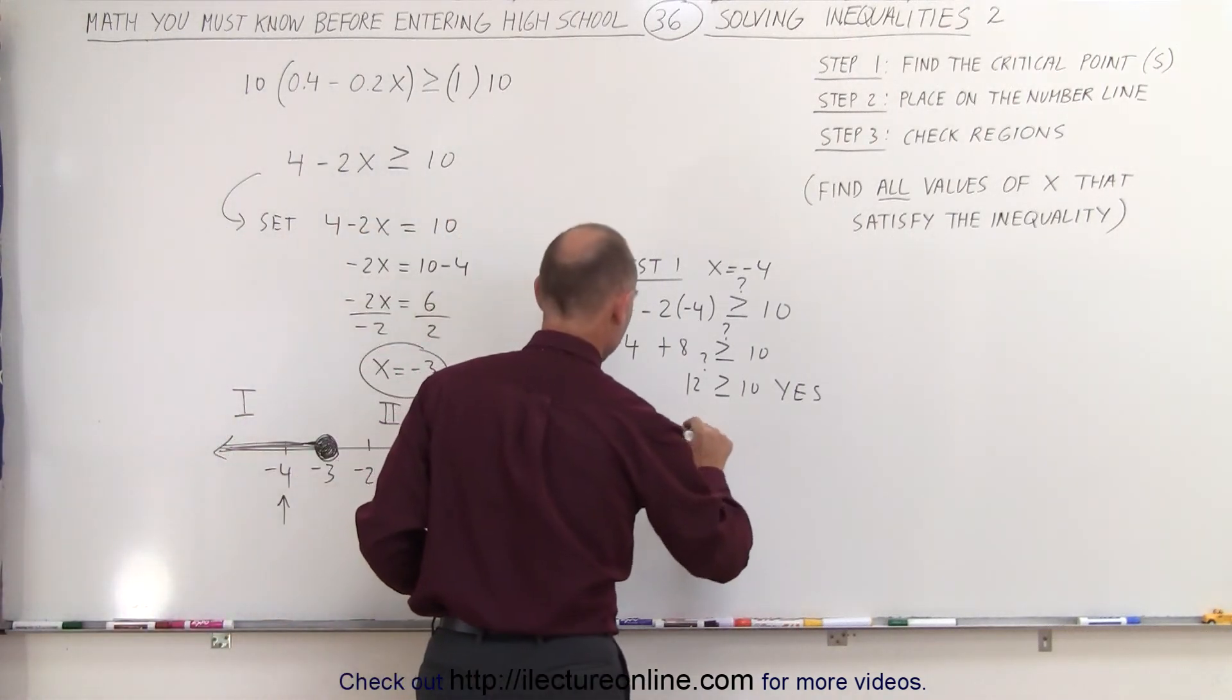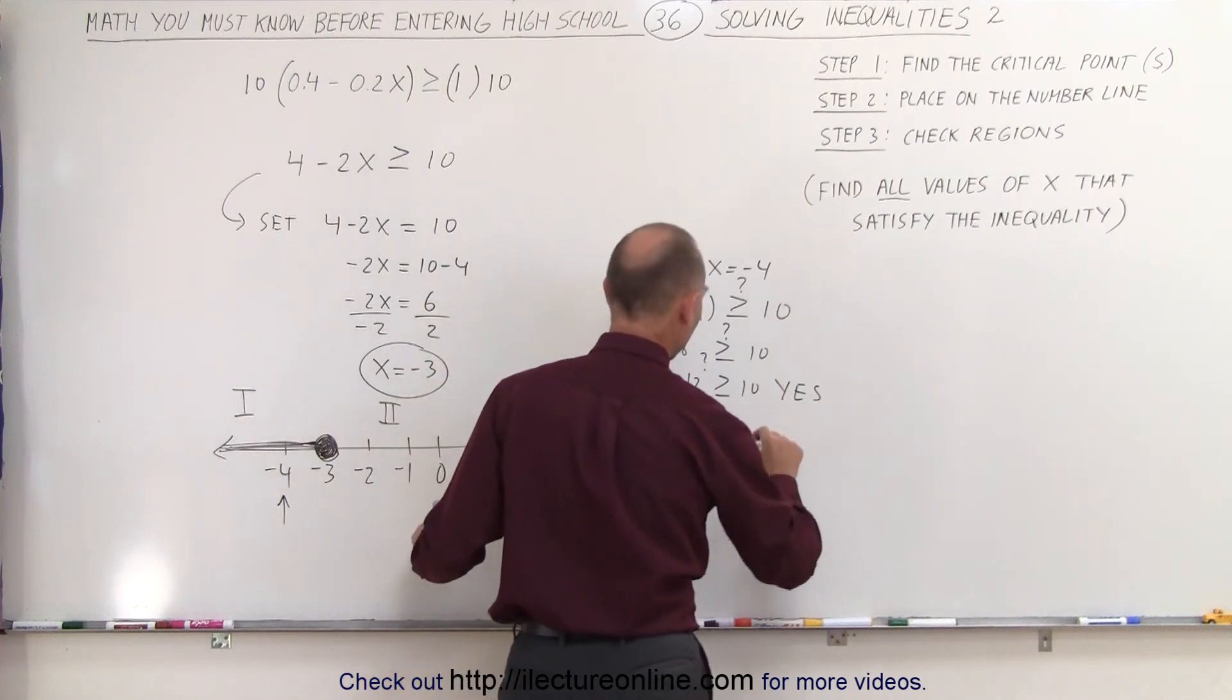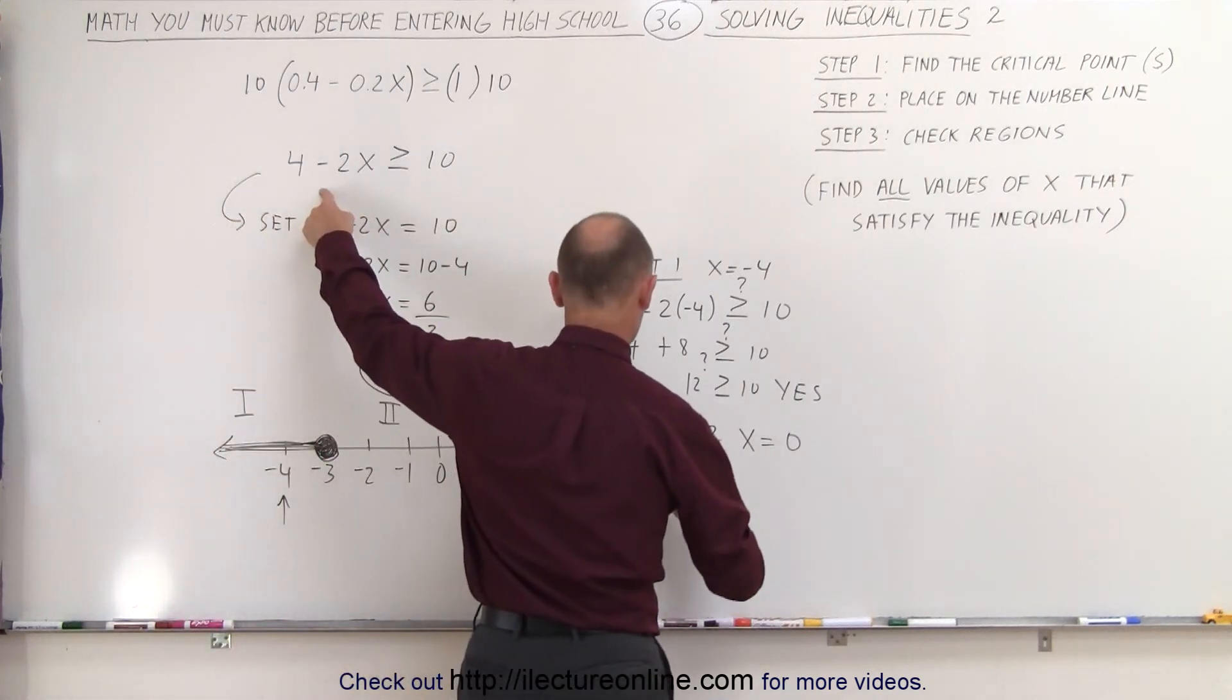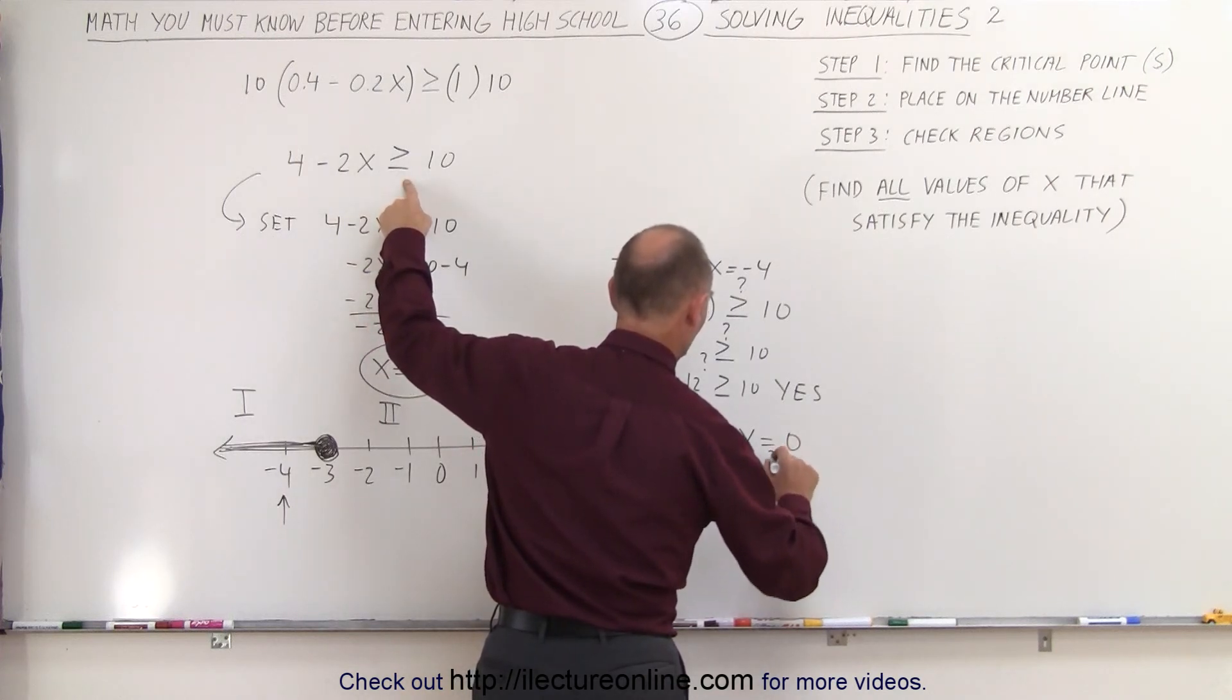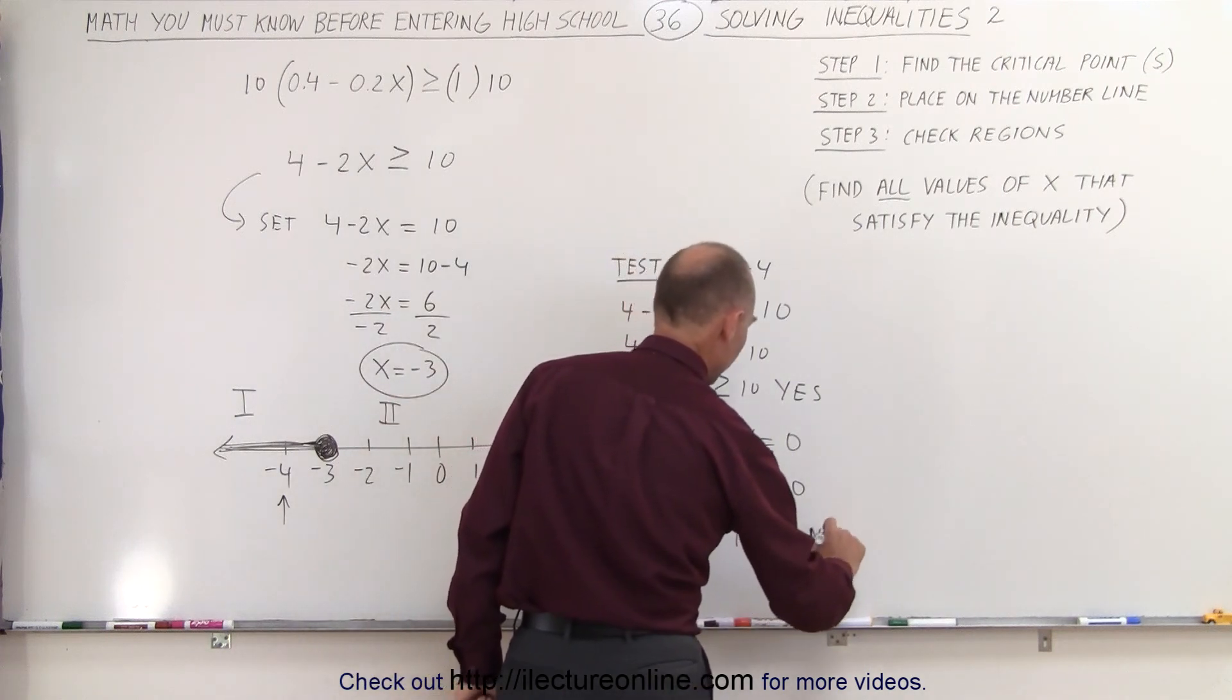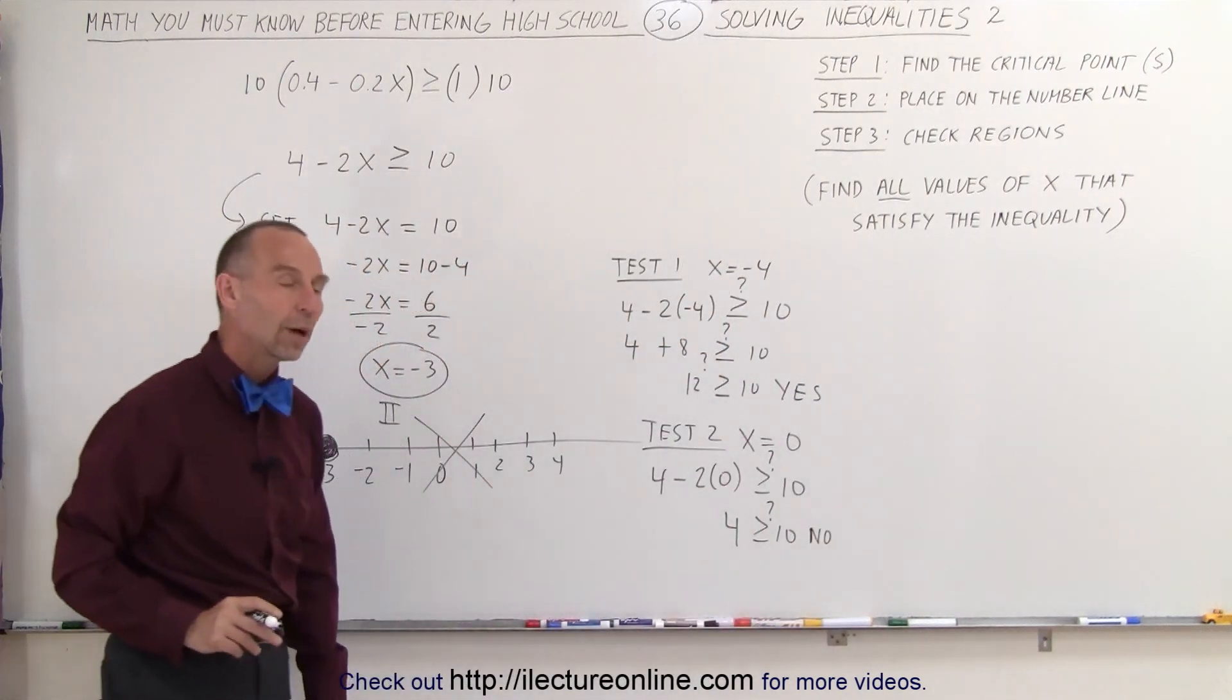We're going to do test number 2. To do that, we're going to plug in another point. I always like to pick x equals 0 if I can, because that makes things a lot easier to work with. We plug that into our inequality: 4 minus 2 times 0, is that greater than or equal to 10? Of course, 2 times 0 is 0, and so we get 4 greater than or equal to 10, and the answer is no.